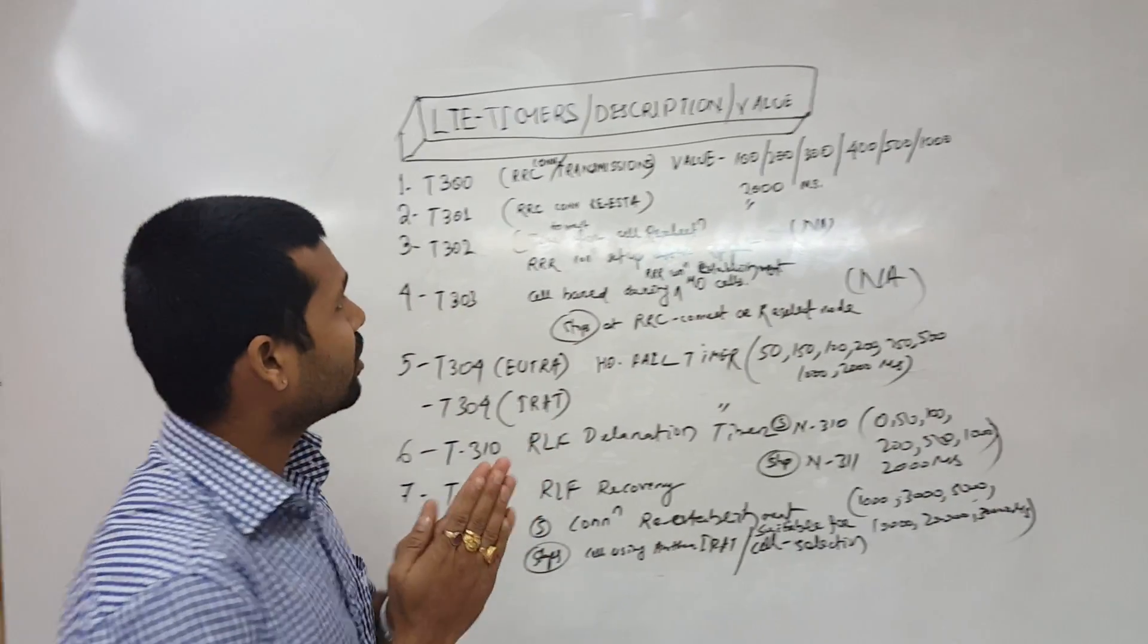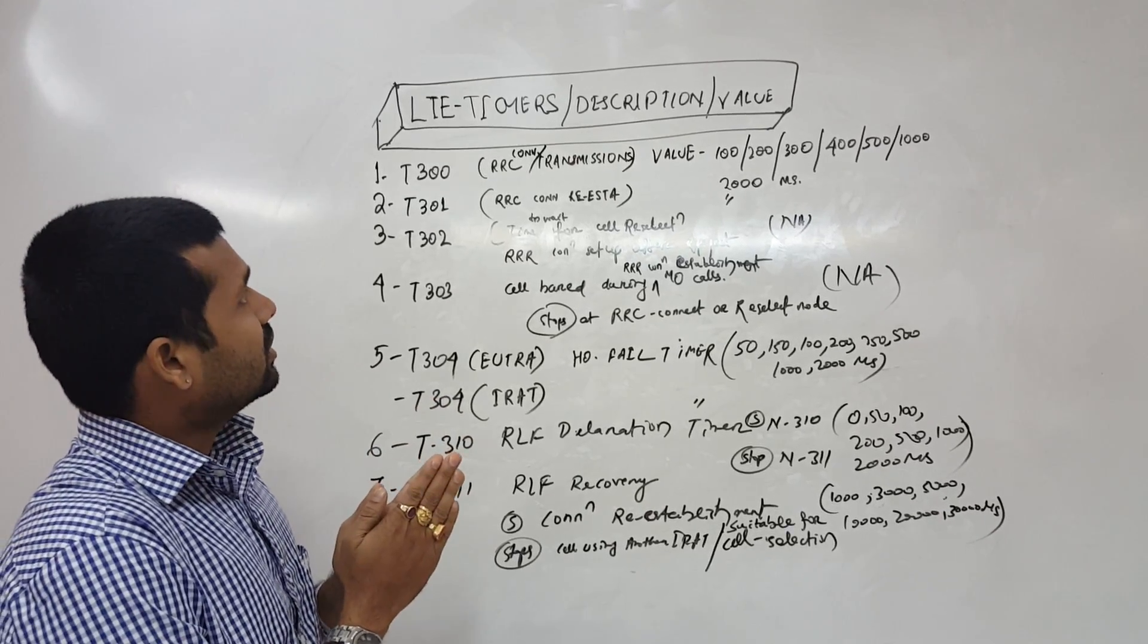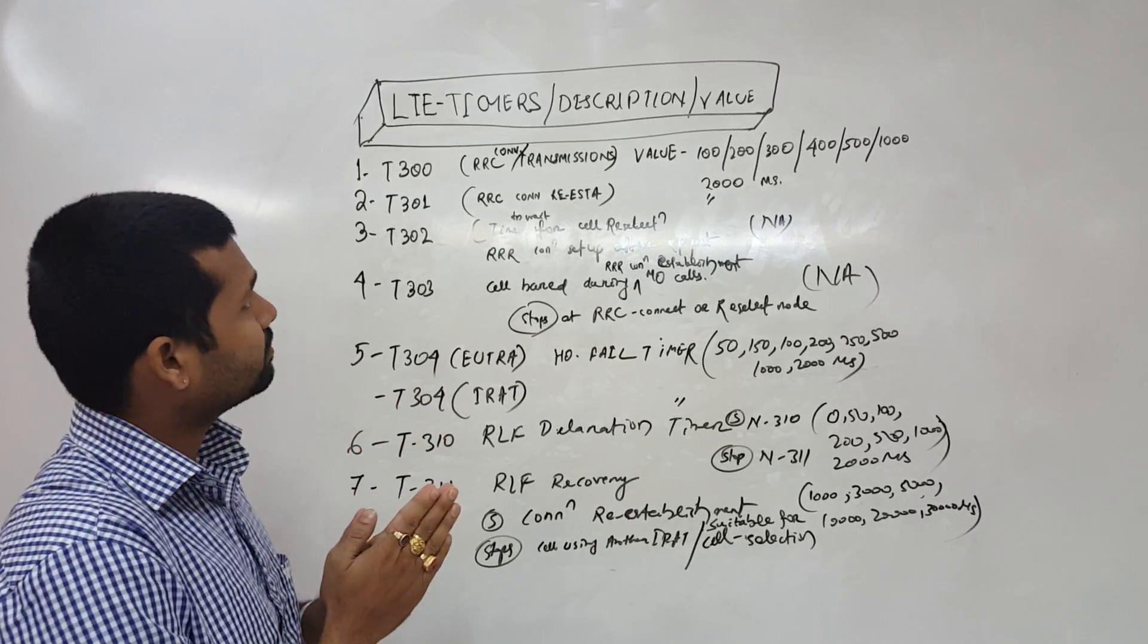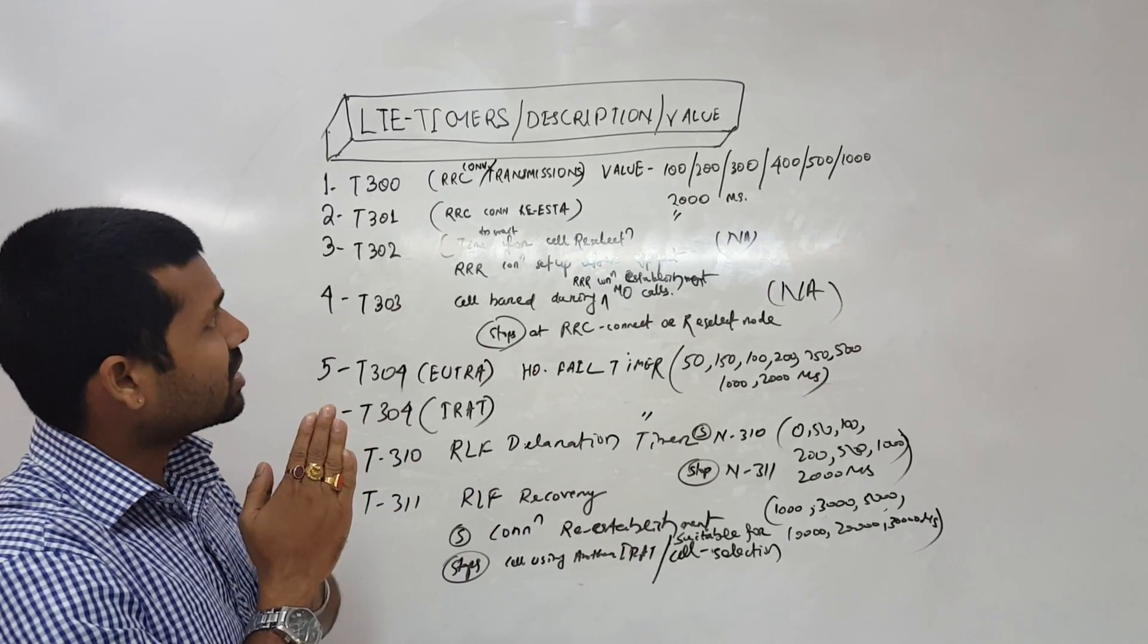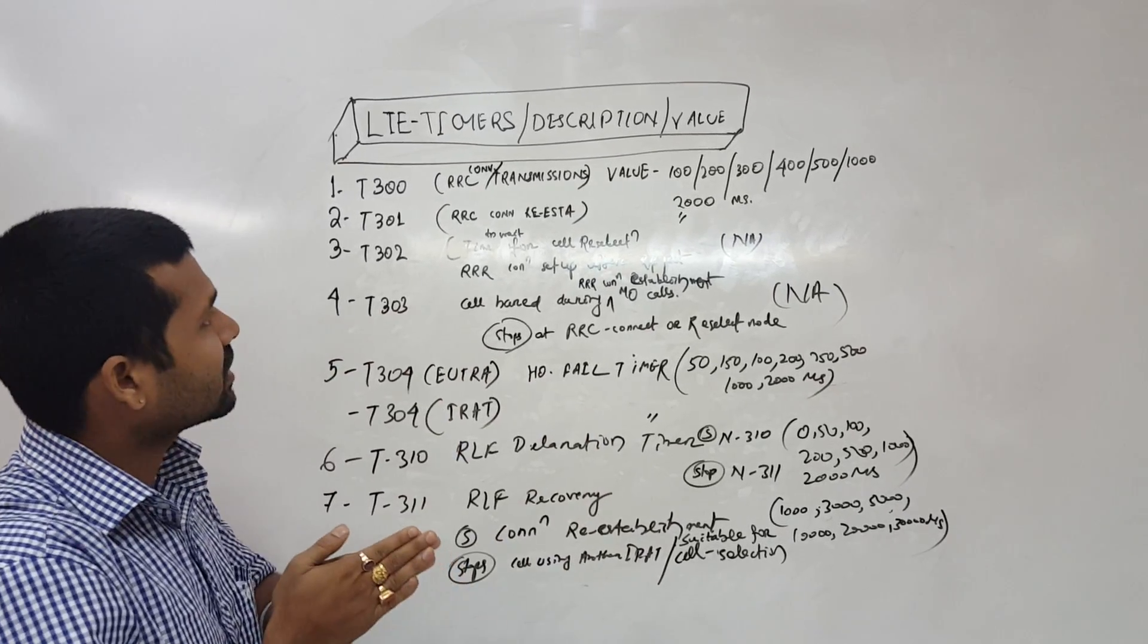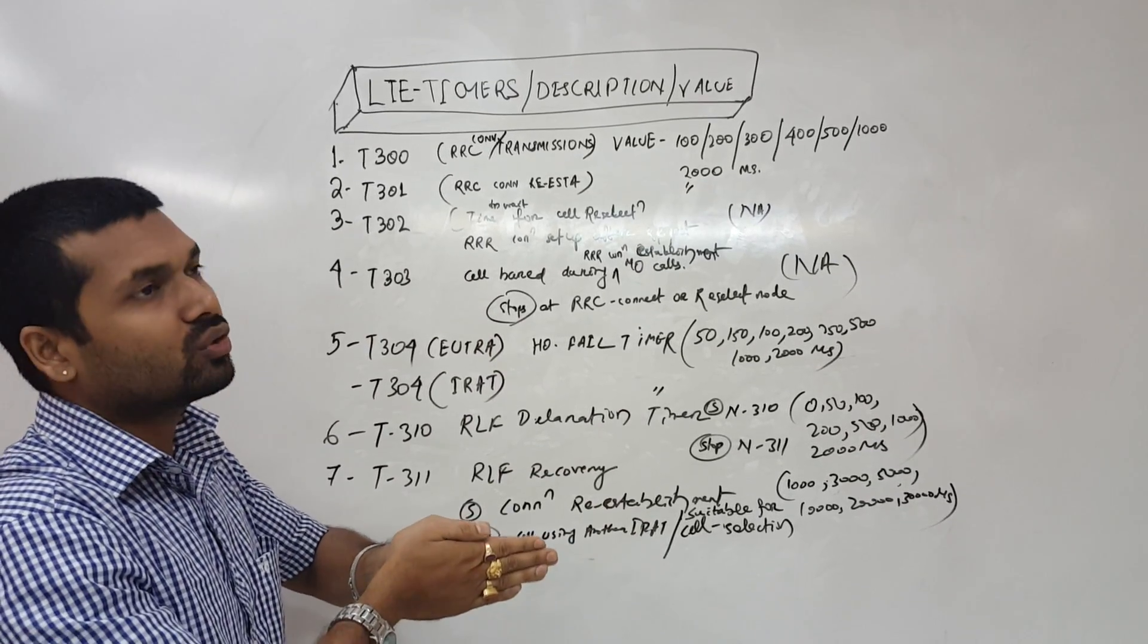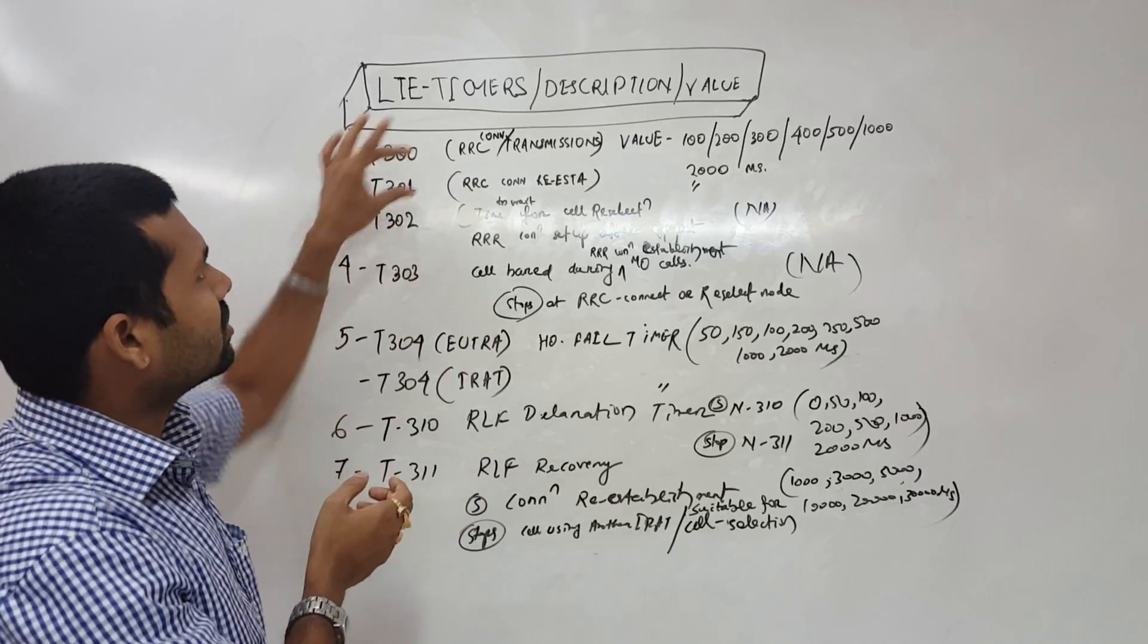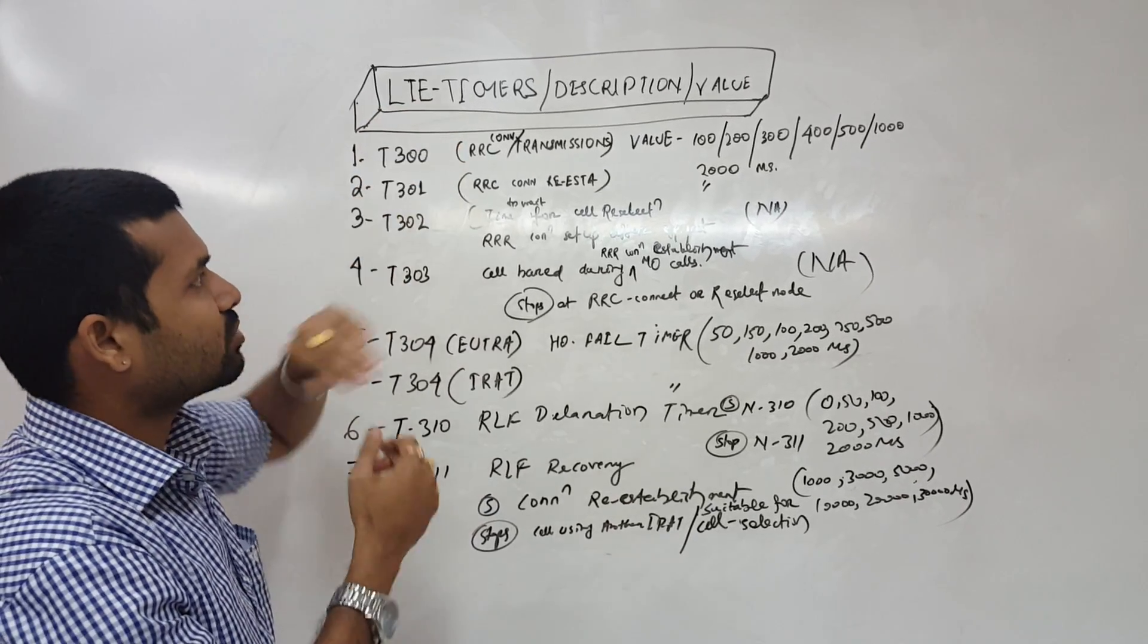That's all about the important timers. T310, T311 for RRC connection. T302 is time for RRC connection re-establishment. I'm doing a re-establishment for RRC connection.